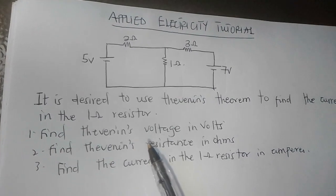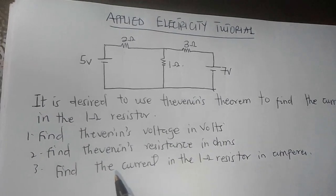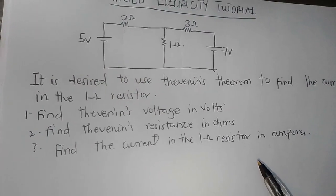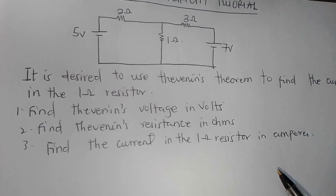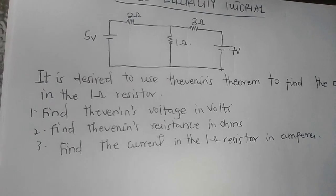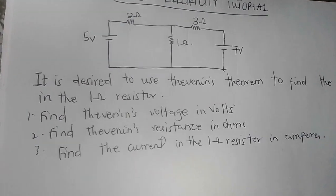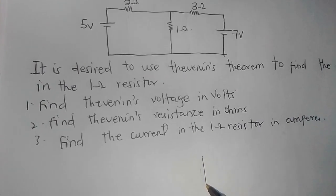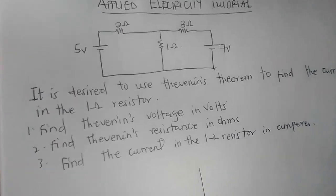The first question is: find the Thevenin voltage in volts, find the Thevenin resistance in ohms, then finally find the current in the 1 ohm resistor in amperes. Please subscribe if this is your first time visiting this channel, and don't forget to watch this video to the end.